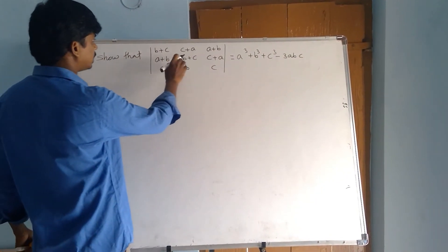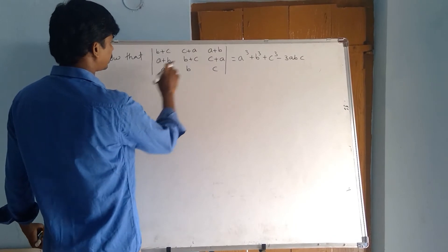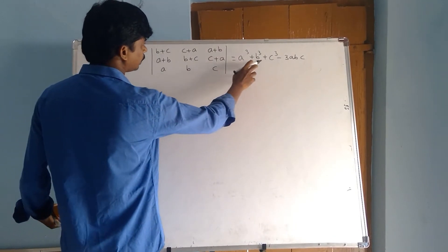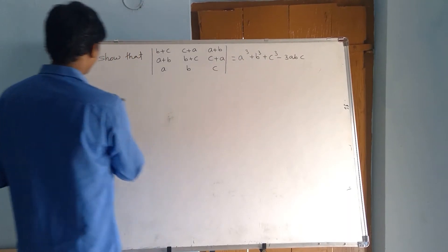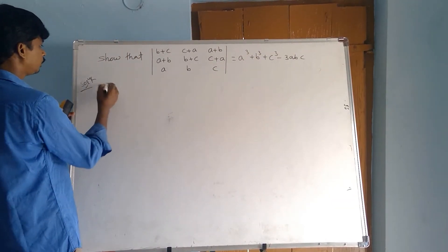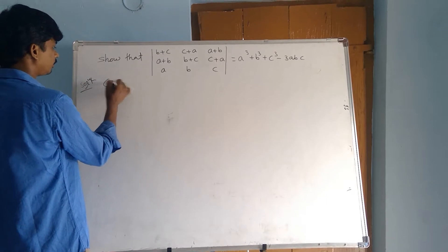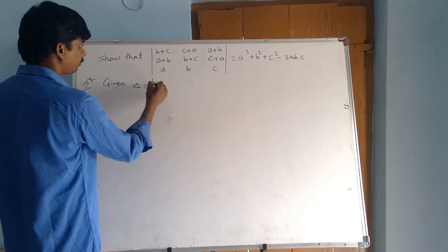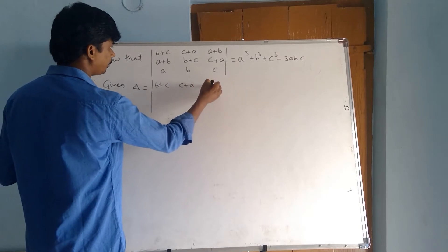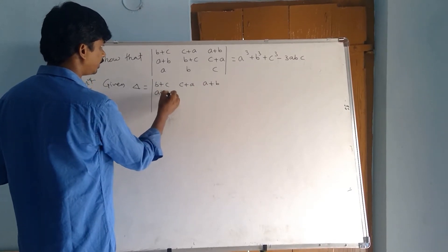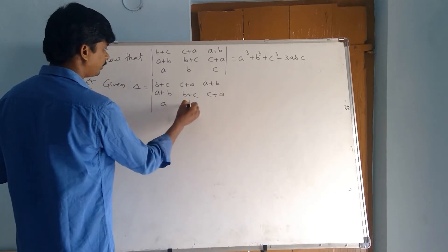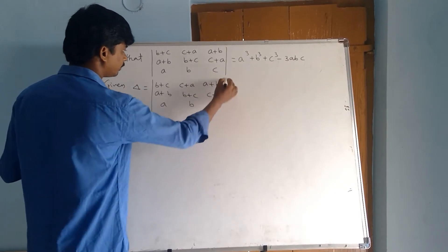So that delta equals the determinant with rows: (B+C, C+A, A+B), (A+B, B+C, C+A), (A, B, C). Show that this equals A³ + B³ + C³ - 3ABC.